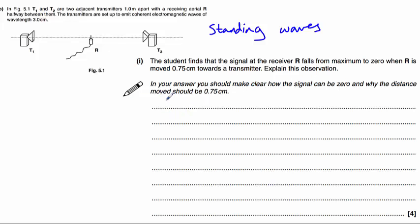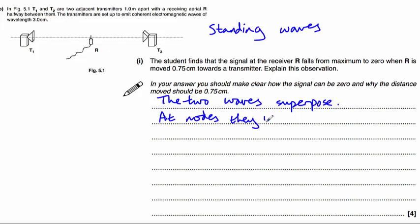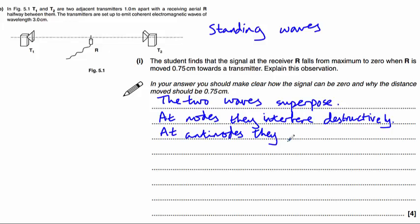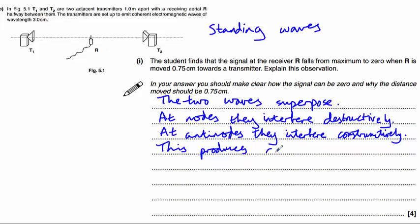We need to explain how a standing wave is formed. The two waves superpose. At nodes, they interfere destructively. At anti-nodes, they interfere constructively. This produces a standing wave.